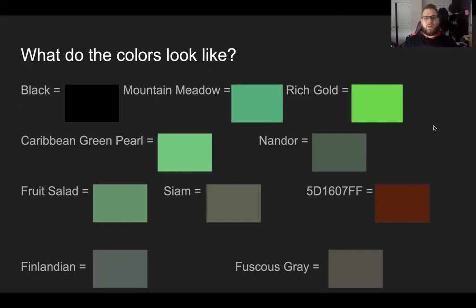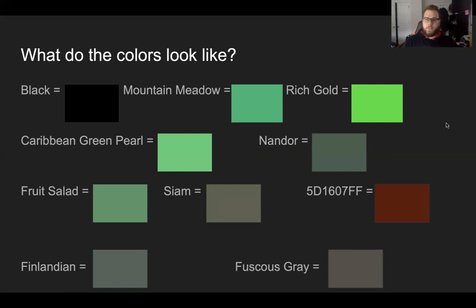Right here, we can see all the colors and what they look like according to their names. As we can see, it goes from black to more of a gray to green to light greens. And 5D1607FF is a brown burgundy. This is a little hard for me to decide because I'm actually one of the few people that is colorblind.